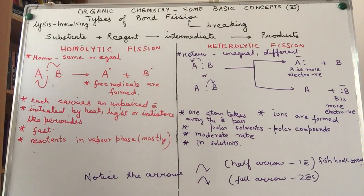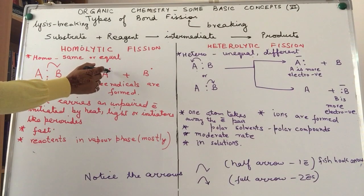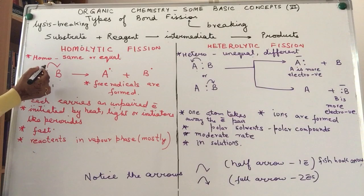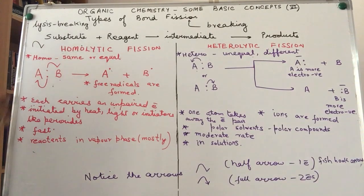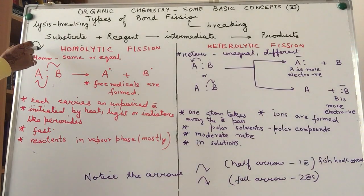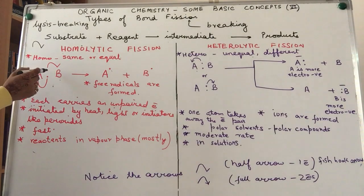The bond breaking happens in such a way that each of the sharing atom or group takes away its electron, with the result each one of them will have an unpaired electron denoted by a dot. If you notice carefully, we're talking about only one electron shifting towards each of the atoms. Hence it's indicated by the half arrow, also called the fish hook arrow, because we are talking about movement of only one electron from here to B and from here to A.